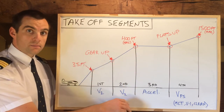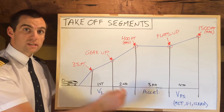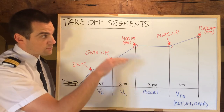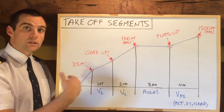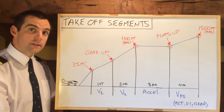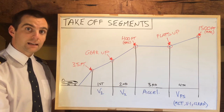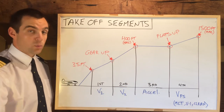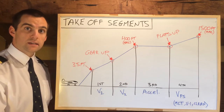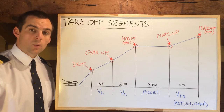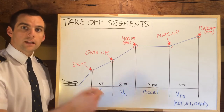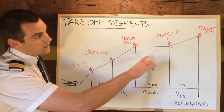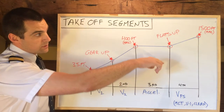In the third segment is where we start to accelerate. So here it's a relatively flat segment, and all we're doing is accelerating and cleaning the aircraft. So we're retracting our flaps. As our speed increases, we are able to retract the flaps until the flaps are retracted. And that is our third segment.